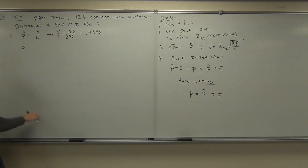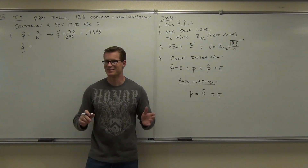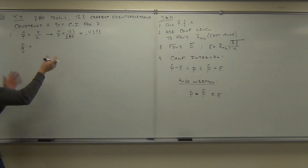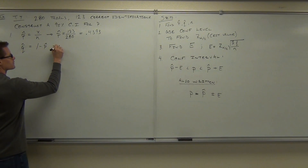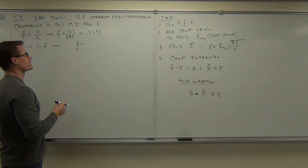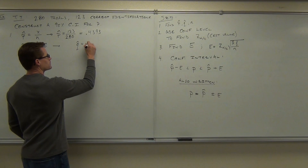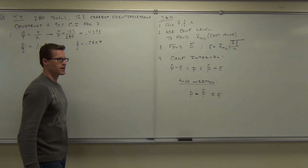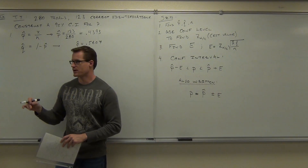Next thing up was Q-hat. What's Q-hat? Failures. How do you find it? Our Q-hat is 1 minus 0.4393, which is 0.5607. You also need to find your N. Fortunately, if you've done this process and found P-hat, you also found your N.